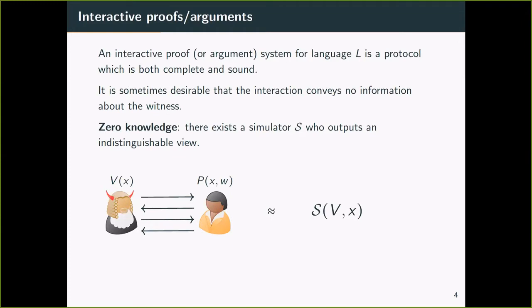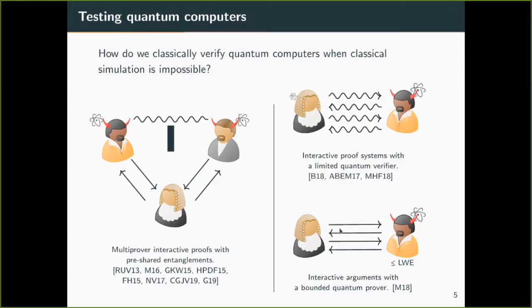In addition, sometimes it's desirable that the information conveys no information about the witness. So this is about the privacy of the witness. A nice property in this setting is the zero-knowledge property. Formally, a protocol is zero-knowledge if there exists a simulator who can simulate the interaction between the verifier and the prover without having access to the witness.